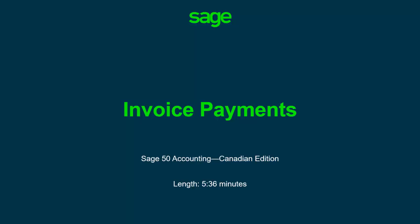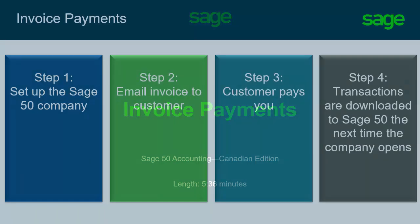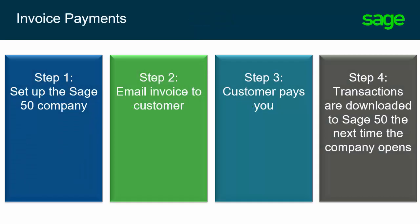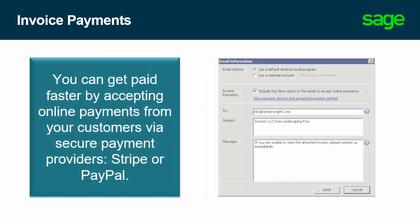Over the next few minutes, we will explain what Invoice Payments is and show you how to set up the Sage 50 company to use it, what invoices you send to your customers look like, and how your customers can easily pay you. With the Invoice Payments feature, you can get paid faster by accepting online payments from your customers by a secure payment provider, Stripe or PayPal.